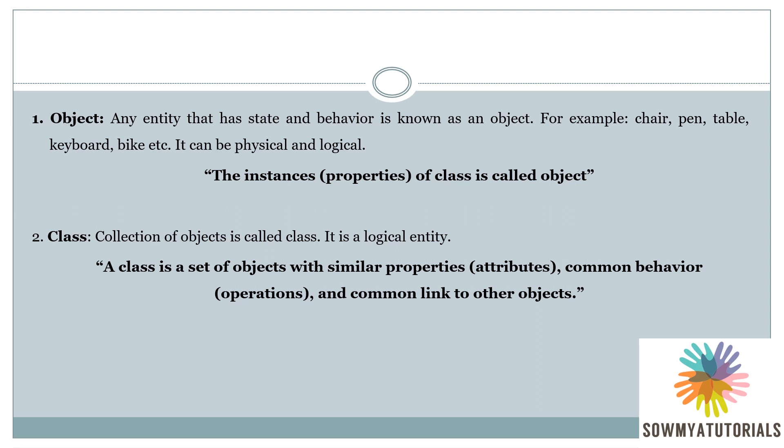Examples of objects are: chair, pen, table, keyboard, bike, etc. Each object has its own properties and behaviors.